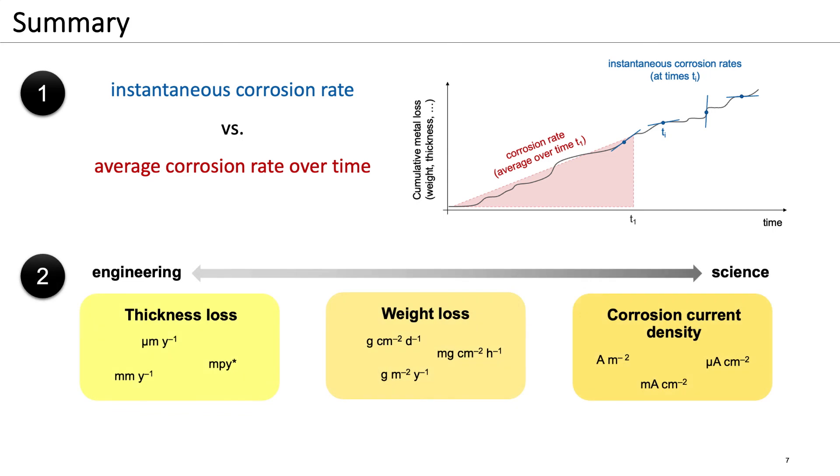Second, you have seen that many different units are used to express corrosion rates. In engineering, units are commonly based on loss of thickness or weight. In the scientific context, often corrosion current densities are used. Finally, we have seen how we can convert between different units.